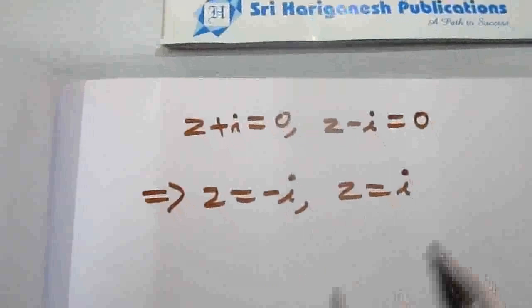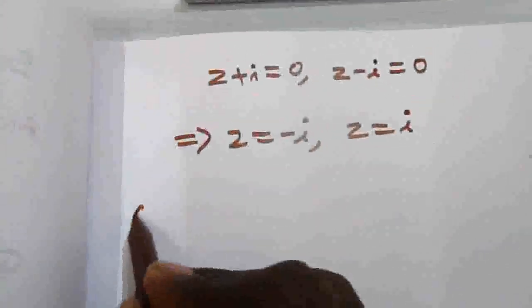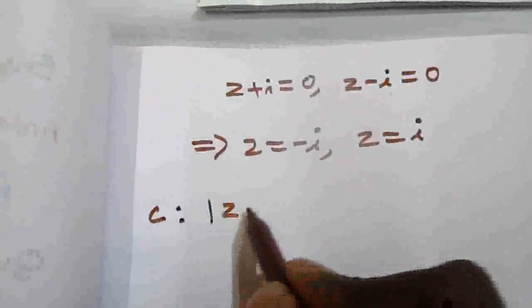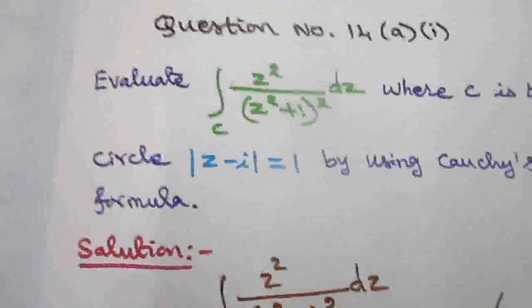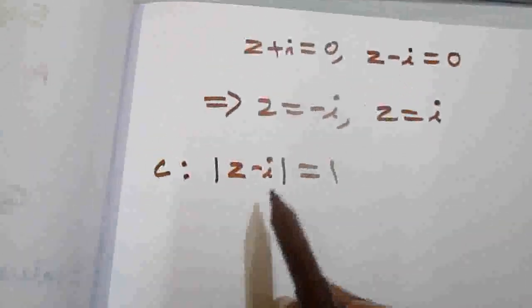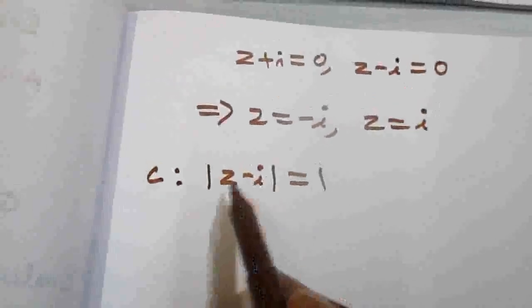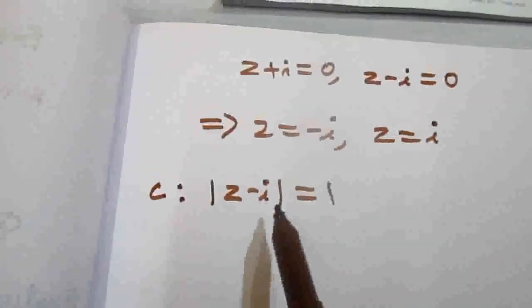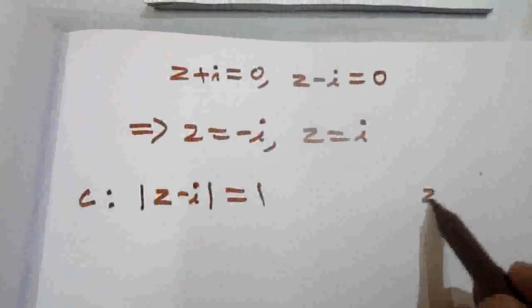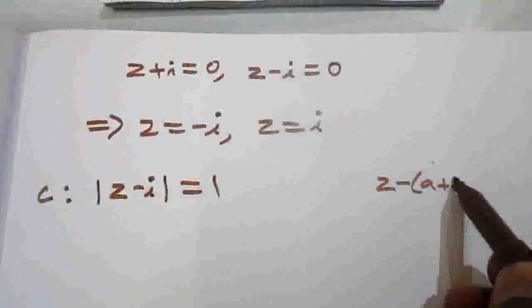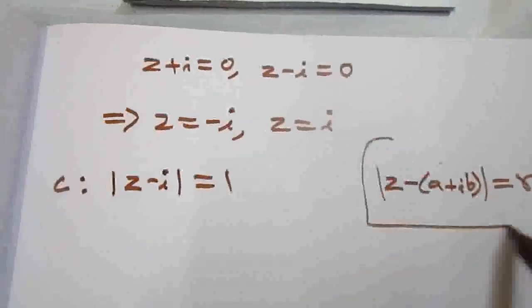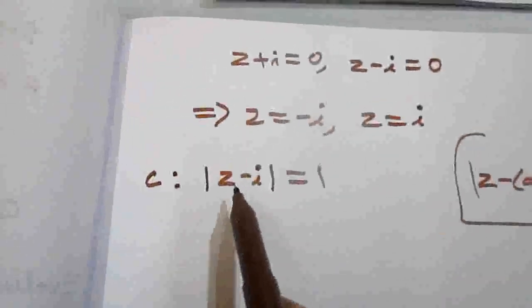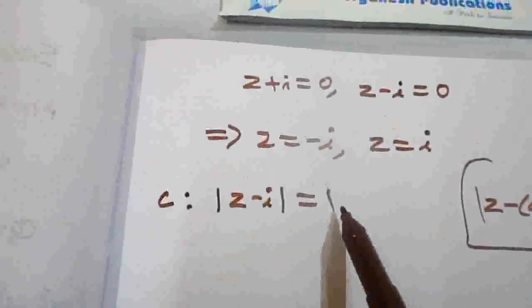Now verify which points lie inside and outside c. The given circle c is |z minus i| = 1. The general form is |z minus (a + ib)| = r, so this circle has center (0, 1) and radius 1.